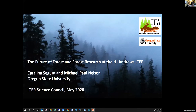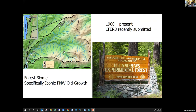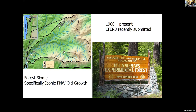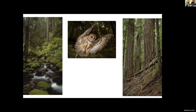We are one of the original LTR sites, continuously funded since 1980, and in early March, like many of you, we have submitted our Earth proposal. We represent a forest biome, specifically a site that consists of large quantities of iconic Pacific Northwest old growth forest. The image on the left gives you a sense of our location near the city of Eugene. We are also a mountainous site with cold, fast streams, huge trees, and iconic species such as the spotted owl.